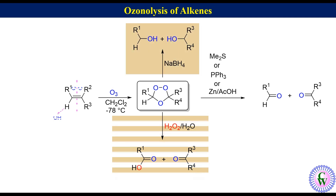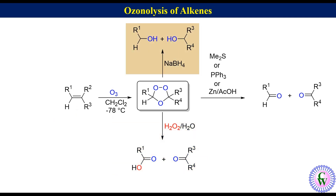To draw the product formed by the reaction of ozonide with sodium borohydride: break the molecule into two parts from the middle of the C-C double bond, change the double bond into a single bond, and connect each single bond with OH.